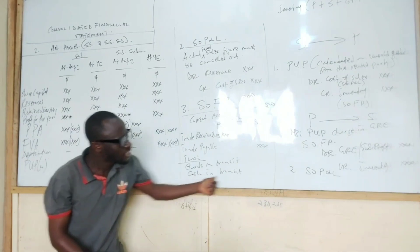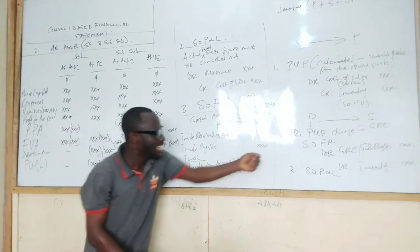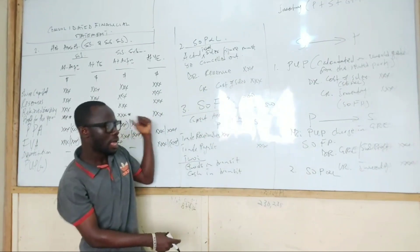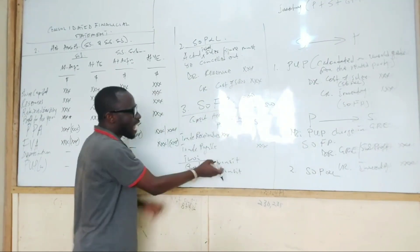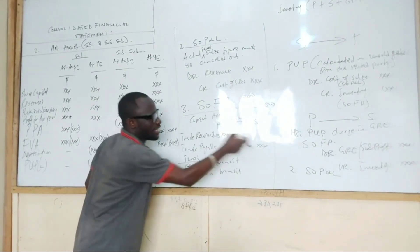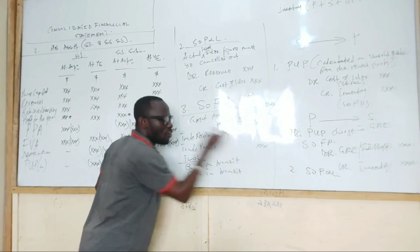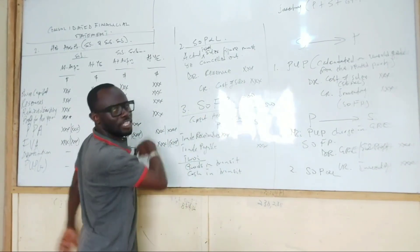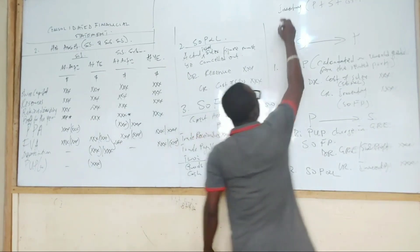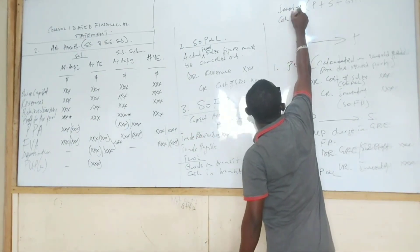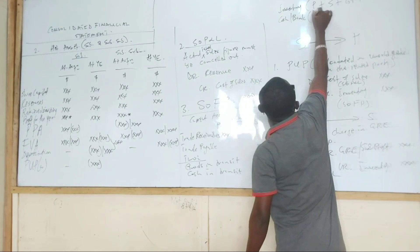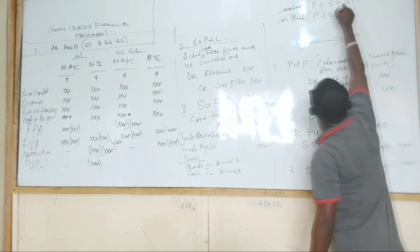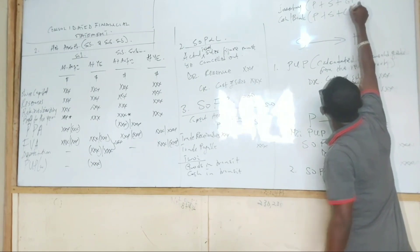Cash in transit means the buyer has sent some money to the seller but as at the end of the year the seller hadn't received the money — that is why there is a difference. For that reason we force the cash into the account of the receiver. So under cash or bank, we bring the parent, we bring the subsidiary, then we add the cash in transit.